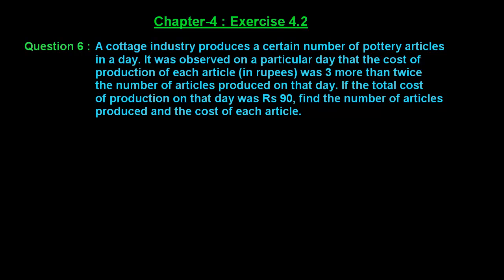To solve question number 6 of exercise 4.2 of chapter 4: A cottage industry produces a certain number of pottery articles in a day. It was observed on a particular day that the cost of production of each article in rupees was 3 more than twice the number of articles produced on that day.